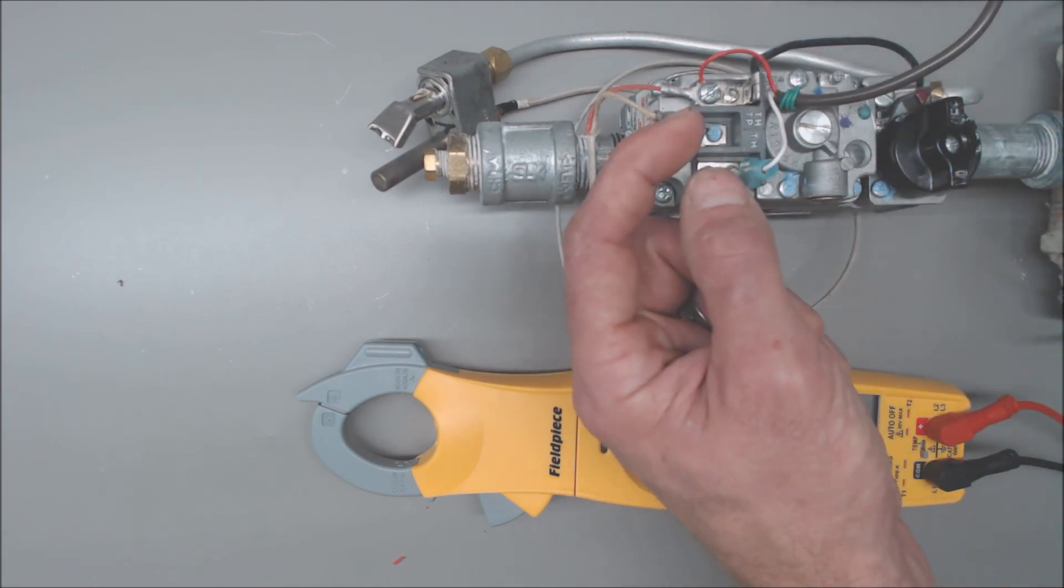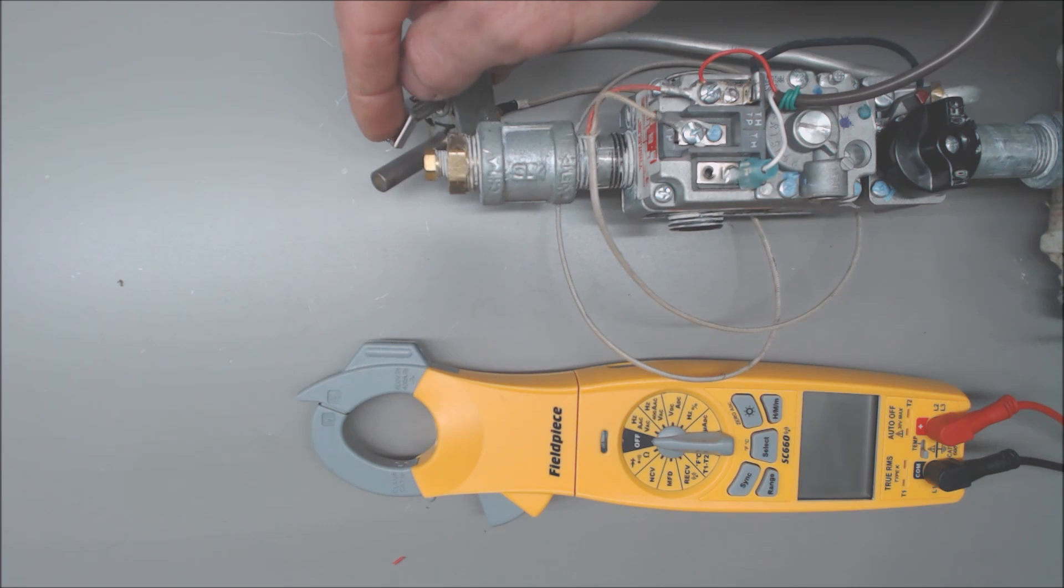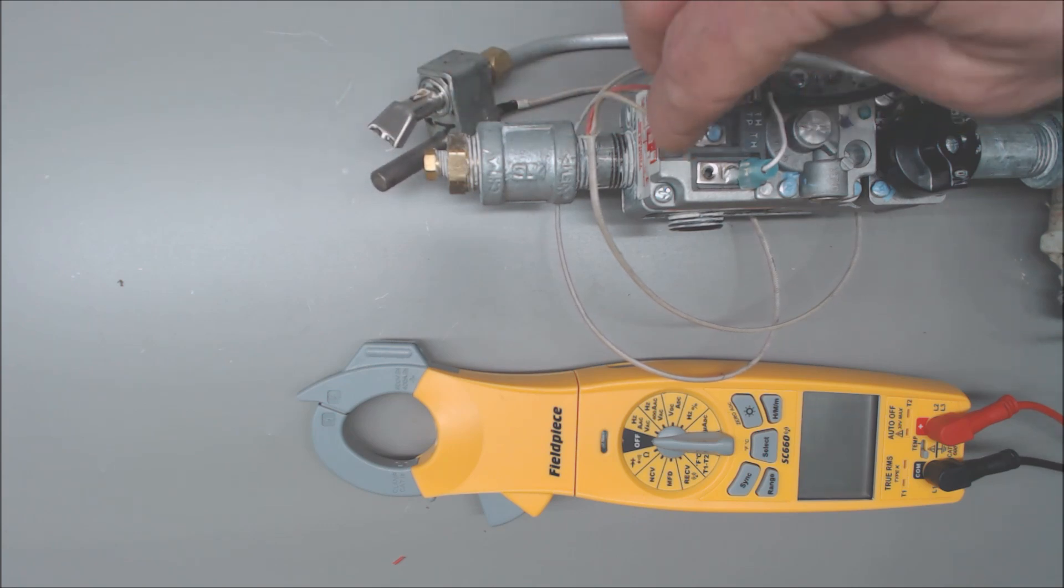These two are your main valve and these two are your pilot valve. You see that this flame is actually going to hit this thermopile and it's going to send millivolts DC to your pilot valve.